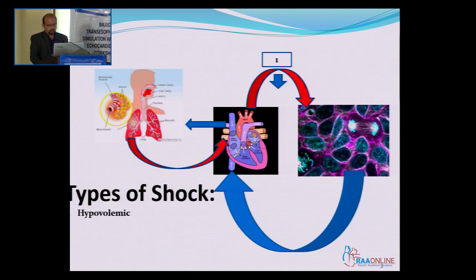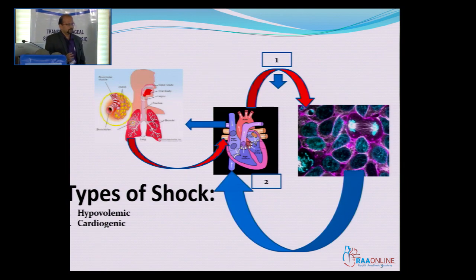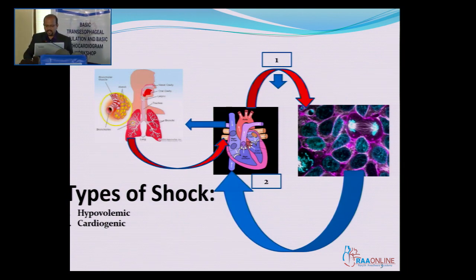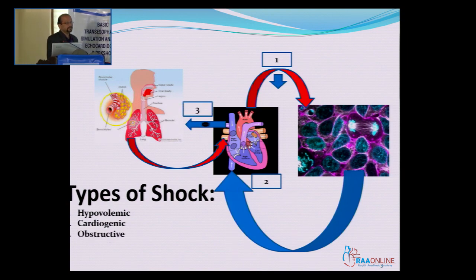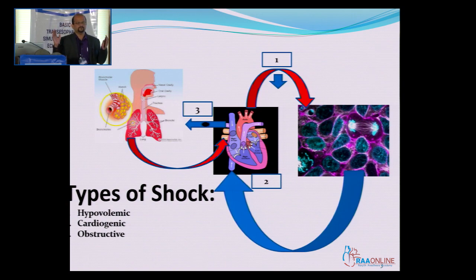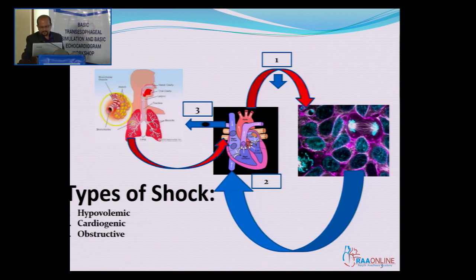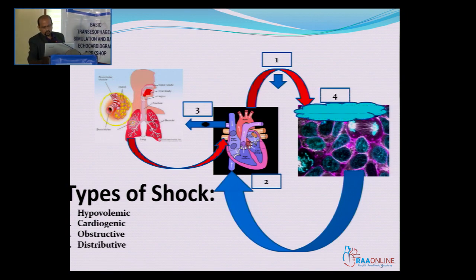The second way is when the heart is not good enough to pump out adequate amounts of blood — that is cardiogenic shock. Then there is a situation where the circulatory system is obstructed, either intraluminally or because of some pressure from outside — that is obstructive shock.